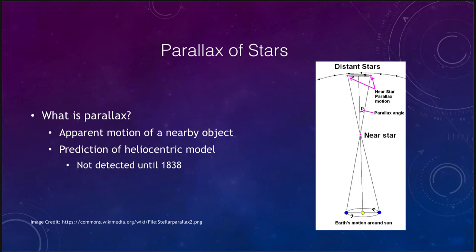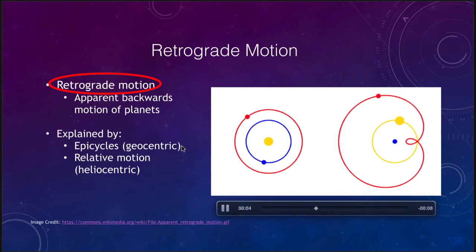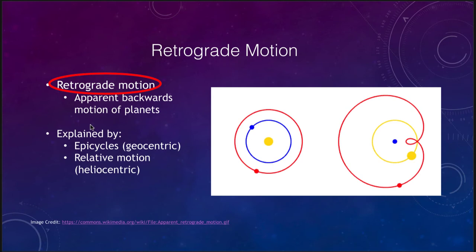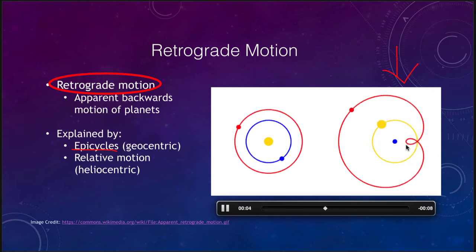What was retrograde motion? Here's a little animation showing how retrograde motion occurs. Retrograde motion is the apparent backwards motion of the planets. This can occur in one of two ways. It can occur because of epicycles in the geocentric universe — shown on the right hand side — where you have the Earth in blue, the Sun moving around it in yellow, and a planet like Mars in red. Its net orbit as it moves around its epicycle gives it this backward motion, so even though the planet moves in multiple circles, putting those circles together gives us this unusual shape.